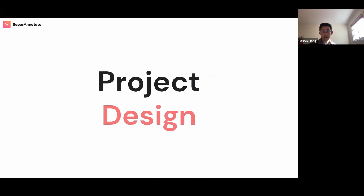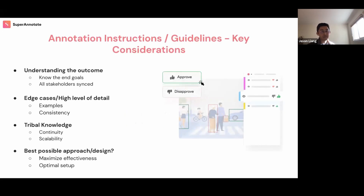Next we'll talk about project design. The first place to start here is with annotation instructions and guidelines — the document that outlines the rules and steps needed for the data labeling process. We're going to cover the following key considerations when designing annotation instructions: first, understanding the outcome of the final product; next, thinking about edge cases and the level of detail; after that, tribal knowledge; and then this idea of the best possible approach.